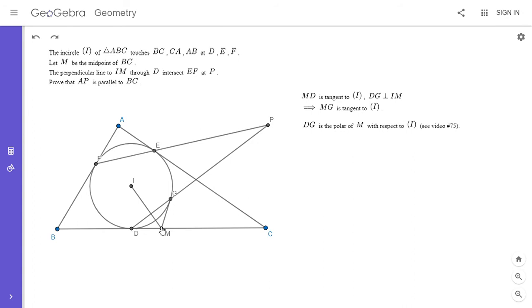So DG is the polar of M with respect to the incircle, because it's the line connecting the two points of tangency. And EF, since AF and AE are tangents, line EF is the polar of A, because that's the line connecting the two points of tangency.